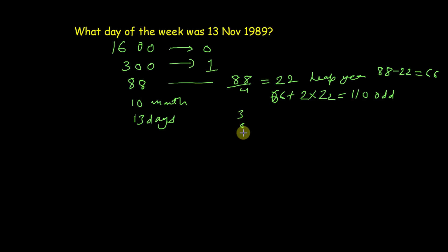Then we'll have 11 months. So we know January has three odd days, February has zero because 1989 is not a leap year, then March has three, April 2, May 3, June 2, July 3, August 3, September 2, October 3, and for November we need to take 13 because date is 13 November. So total is 37 odd days. Then final total is 1 plus 110 plus 37 equal to 148 odd days.